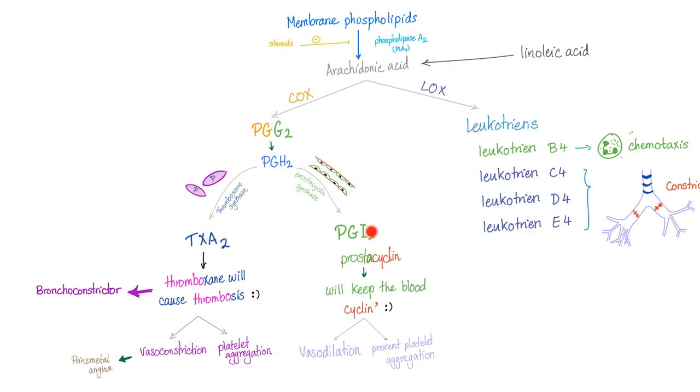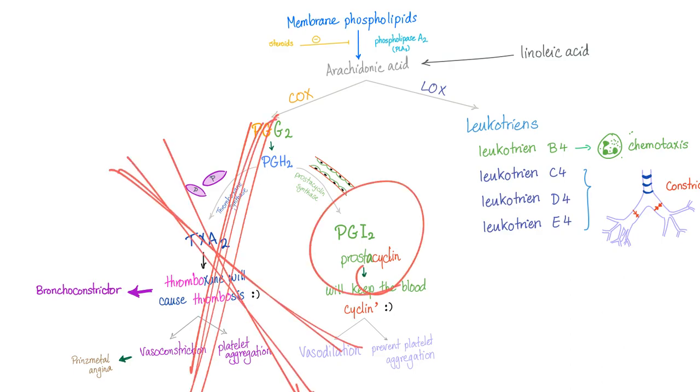Between thromboxane A2 and prostaglandin I2, which one is more affected by aspirin? Aspirin is going to tarnish this. This is gone with aspirin. This, not so much. That's why you bleed under aspirin.